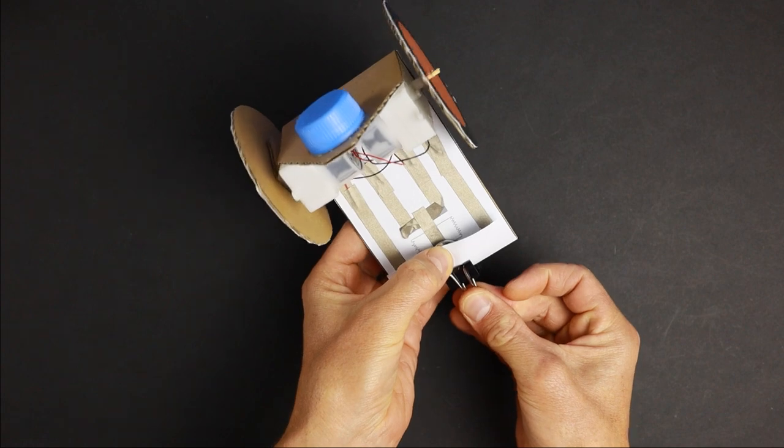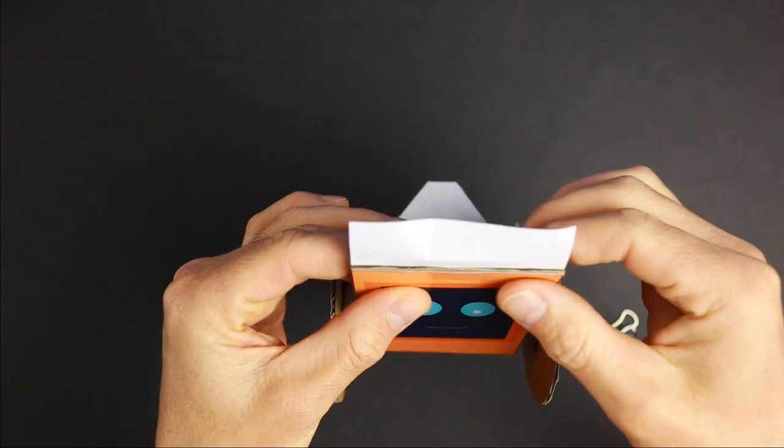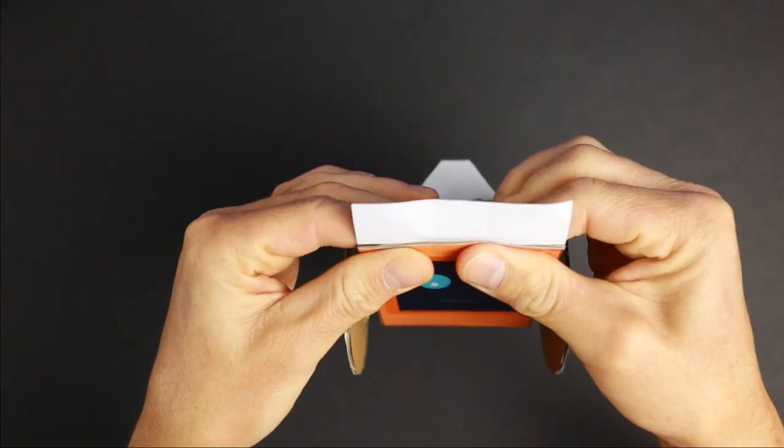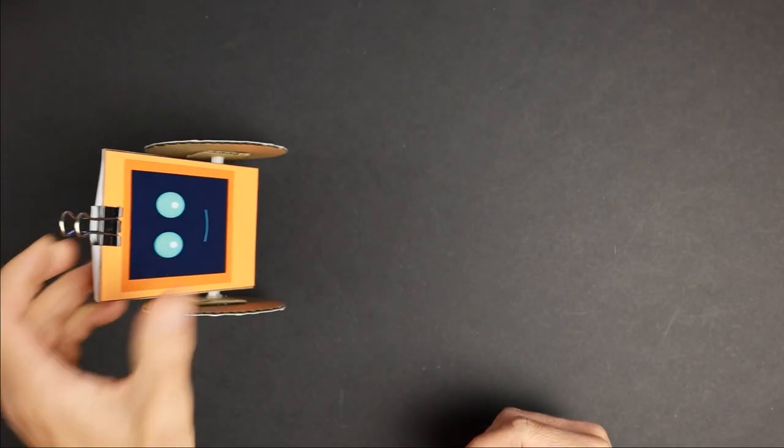Attach two batteries to the circuit like that. Flatten the cardboard up front if your binder clip is too small. Now test your robot.